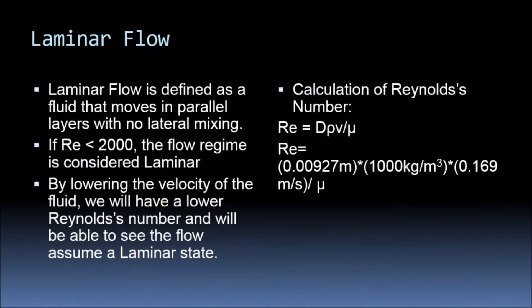If the Reynolds number for flow is under 2,000, it is considered laminar, meaning no lateral mixing. This is achieved experimentally by decreasing the velocity of the system.